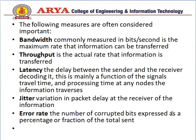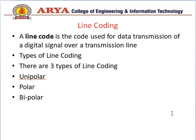Next is line coding. Line coding, or line code, is the code used for data transmission of a digital signal over a transmission line. There are three types of line coding: first is unipolar, polar, and bipolar. We will discuss them one by one in detail.